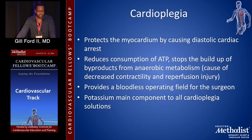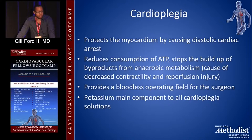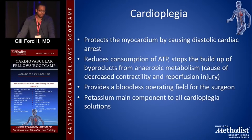Cardioplegia works by causing diastolic cardiac arrest using a high-potassium solution. We arrest the heart because of the consumption of ATP during cross clamp, along with byproducts of anaerobic metabolism that build up, such as lactic acid. When the cross clamp comes off, these factors can cause reduced contractility and increased myocardial stunning, sometimes necessitating an assist device to allow the heart to recover. Arresting the heart is intended to prevent these things from happening.